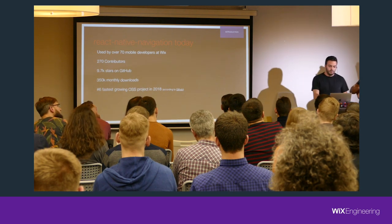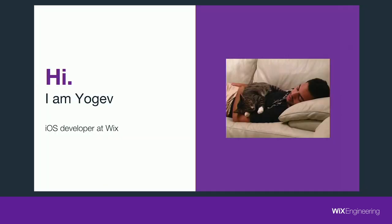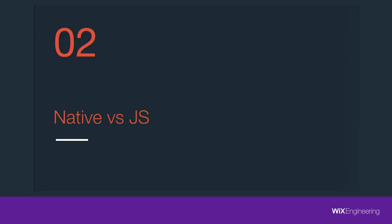Hello everyone, my name is Yogev. I'm an iOS developer at Wix and I've been working for the past two years on React Native Navigation. There are many JavaScript solutions out there, so why and when should you consider using a native solution? What features are lacking in JavaScript solutions that we have in the native solution?